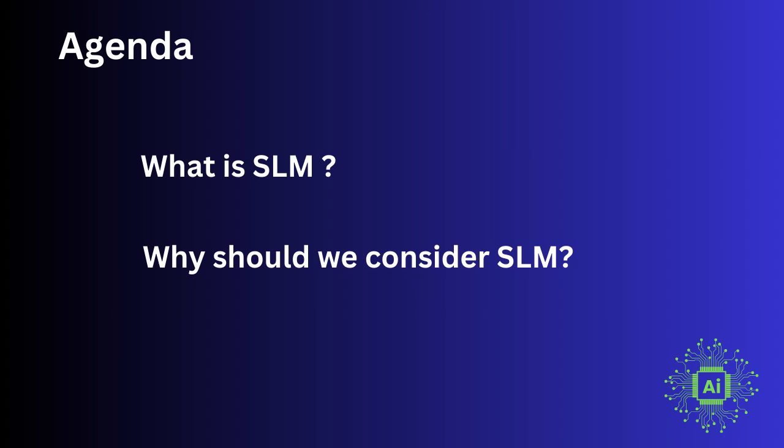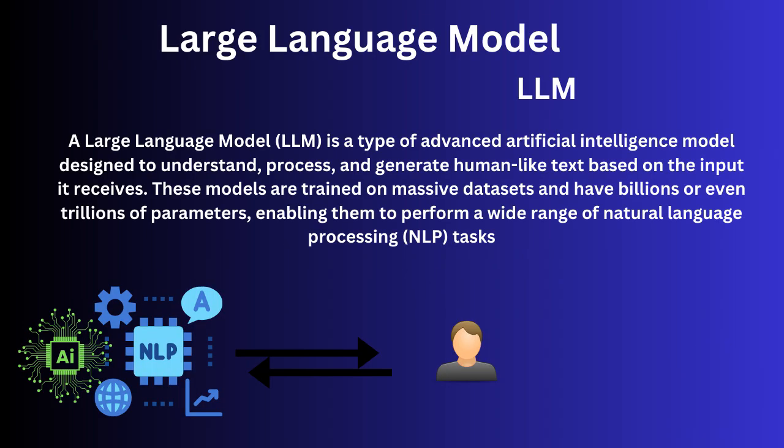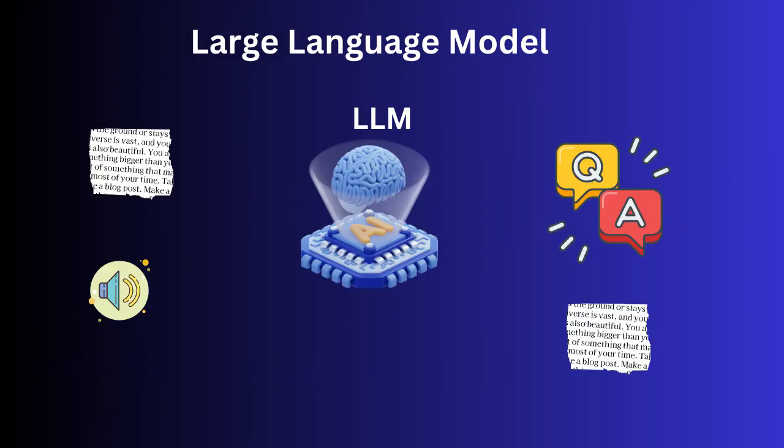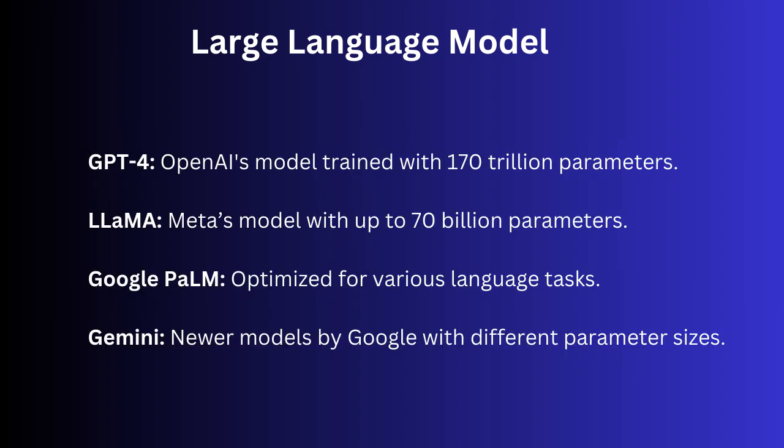First we need to understand what a large language model is. A large language model, or LLM, is a type of advanced artificial intelligence model designed to understand, process, and generate human-like text based on the input it receives. These models are trained on massive datasets and have billions or even trillions of parameters, enabling them to perform a wide range of natural language processing. GPT-4, Llama, Google PaLM, and Gemini are some examples of LLMs.